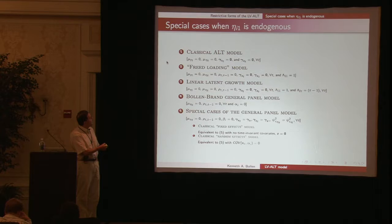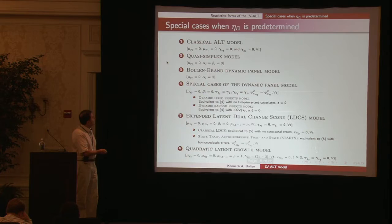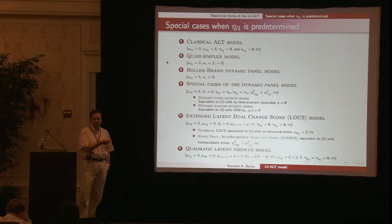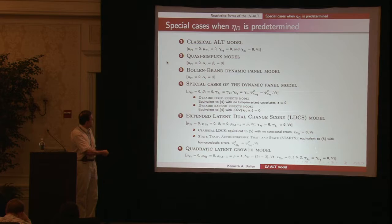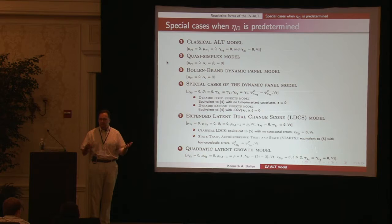I should have added this is when we treat eta_i1 as dependent on alpha. There are two different ways to approach this. This is where eta_i1 is endogenous. If we look at the other model where eta_i1 is predetermined, you can get many of those same models but some additional ones: a quadratic latent growth curve model by imposing this set of restrictions, and a latent dual change score model. The advantage is we have a nested structure so we can do maximum likelihood nested tests to see whether your chosen model is as good as alternatives that don't impose the same restrictions.